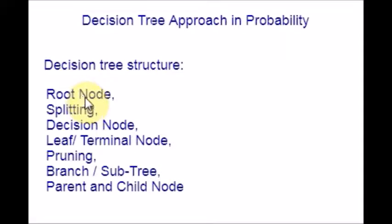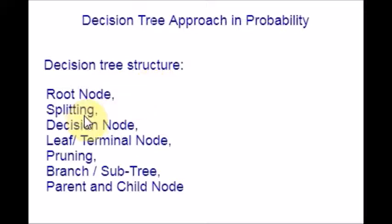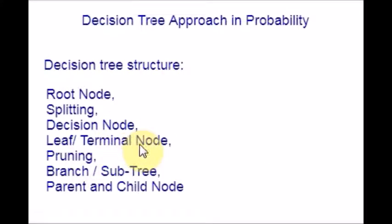First, root node: this represents the entire population or sample, and it further gets divided into two or more homogeneous sets. If it is a yes-or-no type question, you will get two branches; if it is a different type, you will get more homogeneous sets. Splitting means the process of dividing a node into two or more subnodes. Decision node means when a subnode splits into further subnodes — branch into one more branch — then it is called a decision node. Leaf or terminal node means nodes that do not split. If no further question arises, we stop at that point.